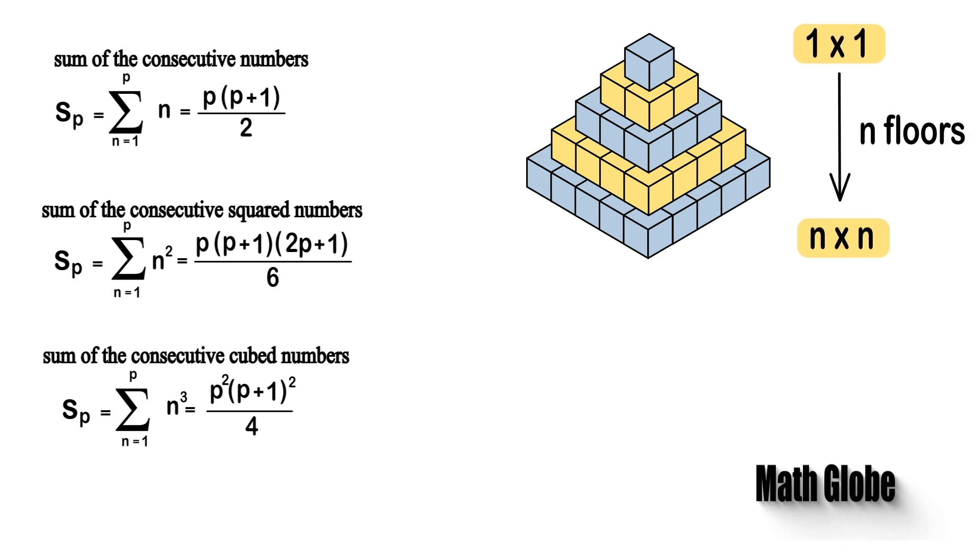Since the number of cubes in each layer is equal to the square of the number of cubes at one side, we'll use the sum of squares version.